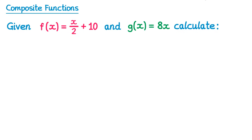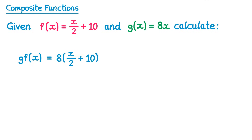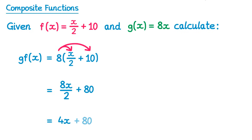Let's try another set of examples now. So we're going to start again with gf of x. We write out the g function but replace the x with brackets — so g of x is 8x, so it's 8 brackets. Then inside that bracket, we write the whole f function. We can then simplify this: if we expand the brackets, we have 8 times x over 2, which gives you 8x over 2, and then 8 times plus 10, which gives you plus 80. And of course 8x over 2 is the same as 4x, so it's 4x plus 80.